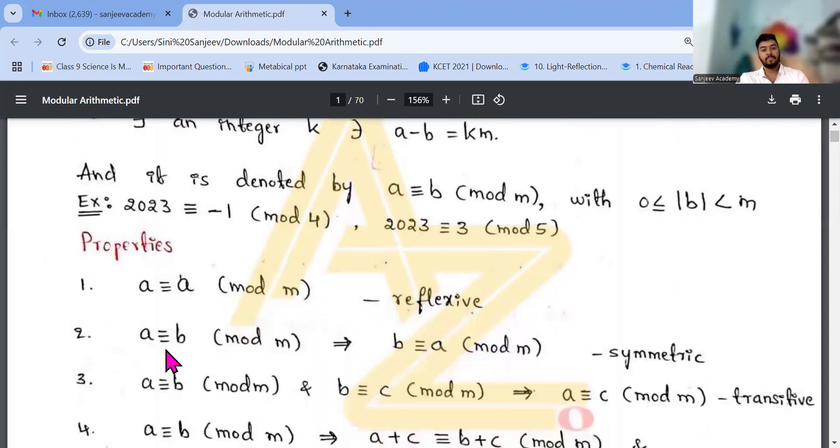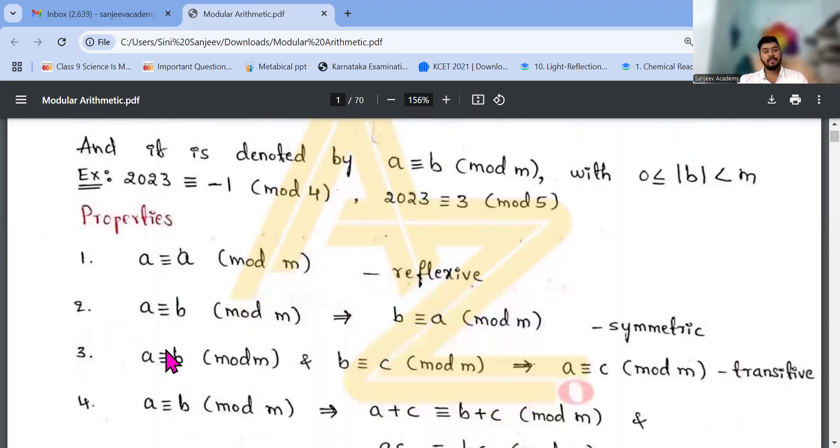So properties, just like we studied in our class 12, relation functions: reflexive, symmetry and transitive. Same thing, a congruent a mod m is reflexive. a congruent to b and b congruent to a is symmetric.